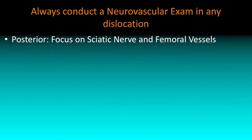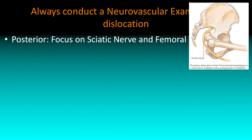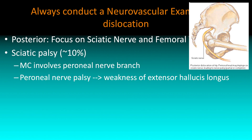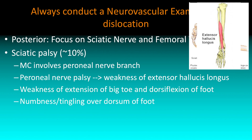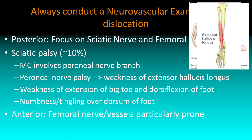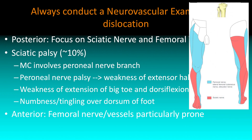Any time you have a dislocation, always do a good neurovascular exam. For posterior hip dislocations, focus on your sciatic nerve and your femoral vessels. You're pushing the femoral head backwards, and the sciatic nerve runs right there — about 10% of people will have sciatic involvement. Most commonly it's the peroneal nerve branch, which controls the extensor hallucis longus. You'll see weakness of extension of the big toe, weakness dorsiflexing the foot, and numbness and tingling over the dorsum of the foot. For anterior dislocations, focus on your femoral nerve distribution and femoral vessels.